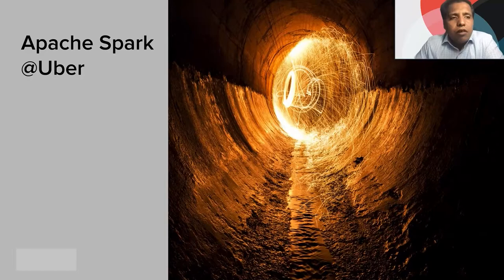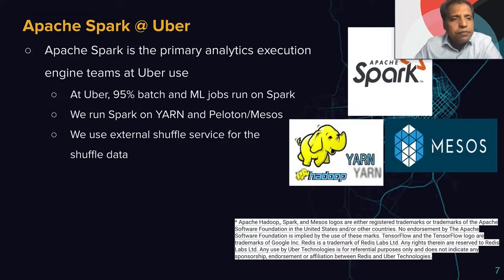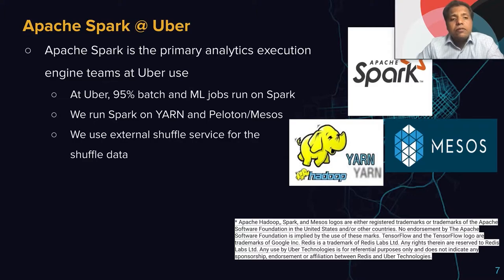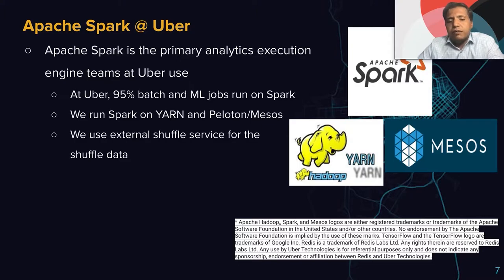Let's talk about Apache Spark at Uber. Apache Spark is the primary analytic execution engine used at Uber — 95% of the batch and ML jobs run on top of Spark. We run Spark on YARN and Peloton on Mesos. We also use the external shuffle service for shuffle data.